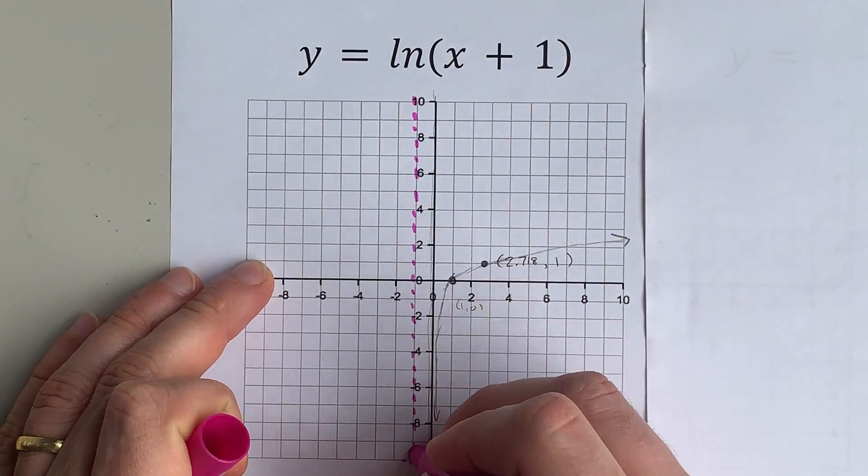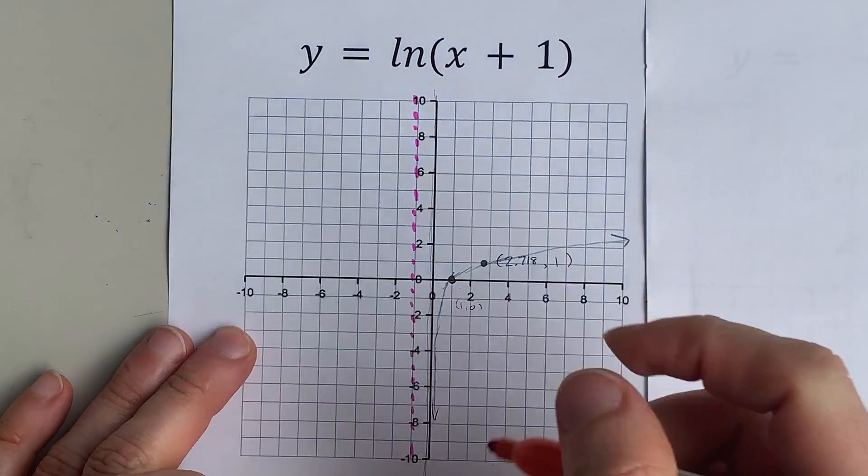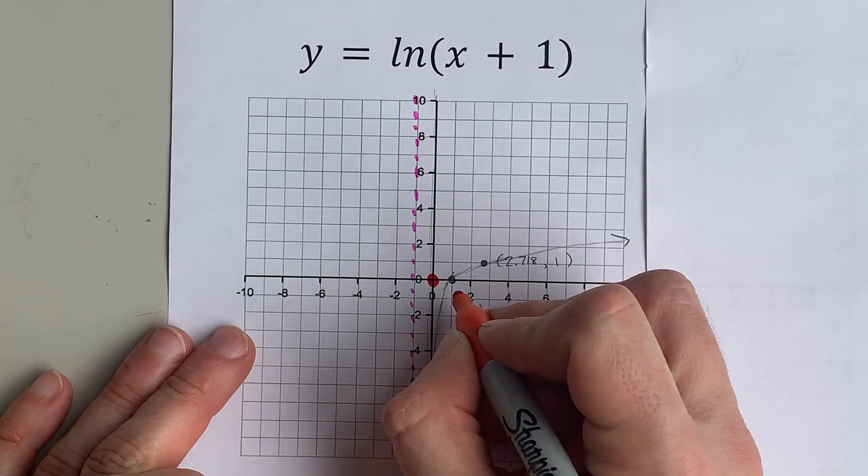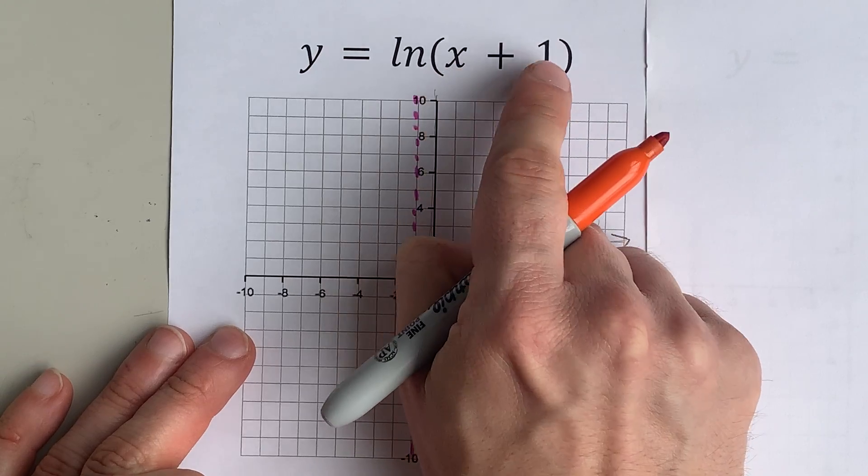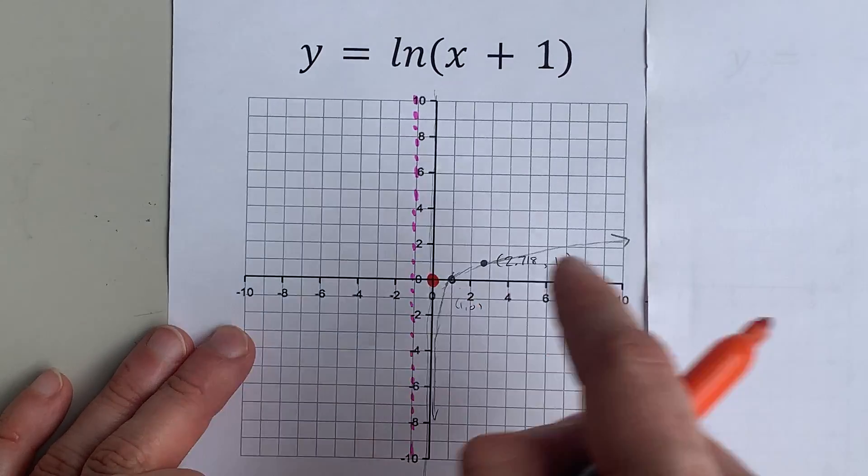It is 1 unit to the left of where it was. The x-intercept of 1 has transitioned to 0, because 0 plus 1 is what gives you 1 to take the ln of, and you get 0 out of that.